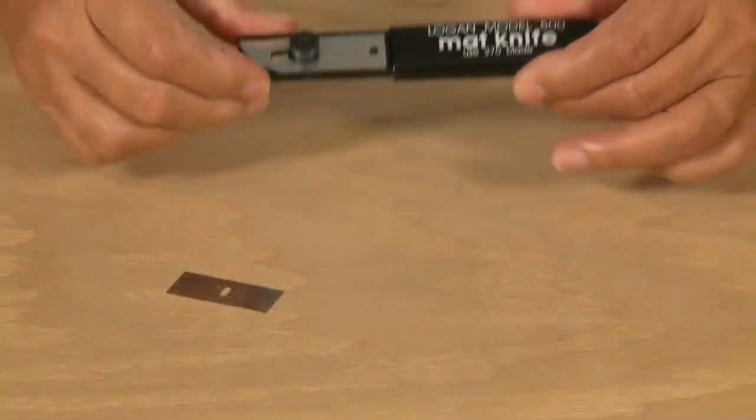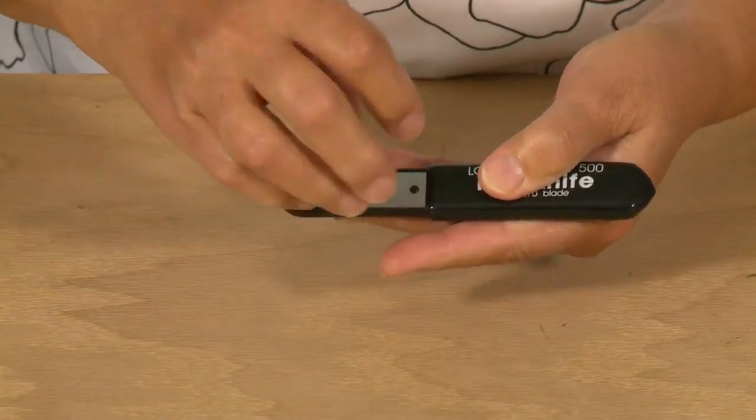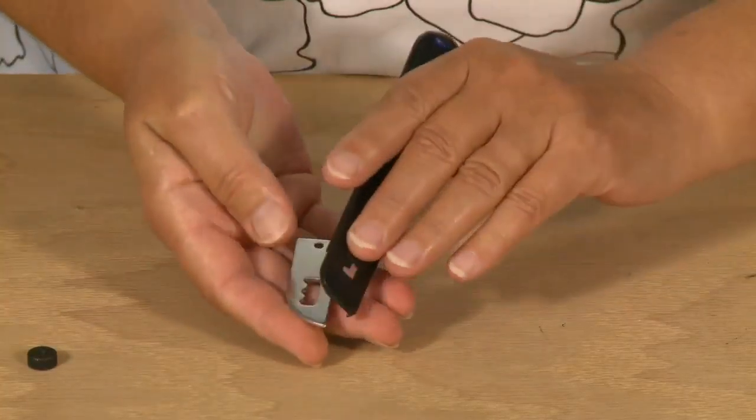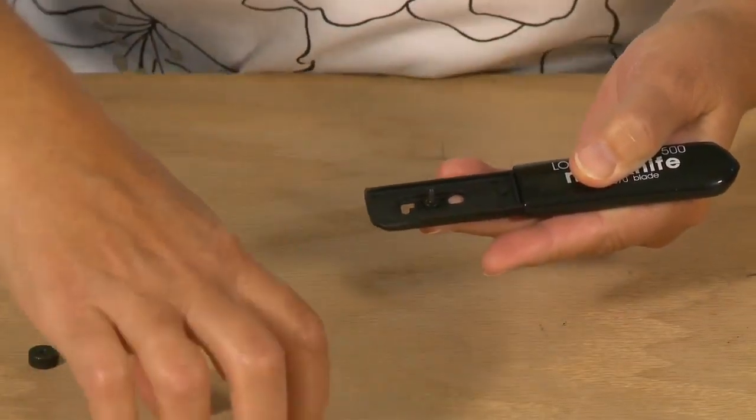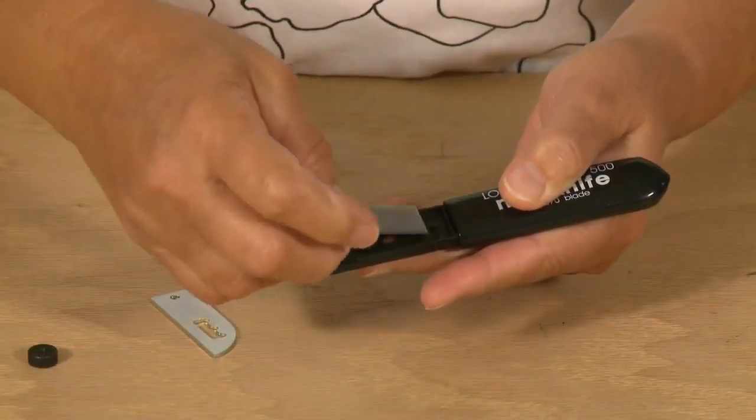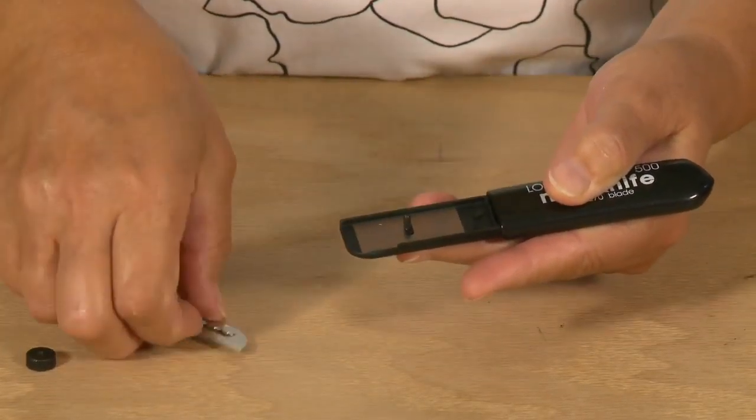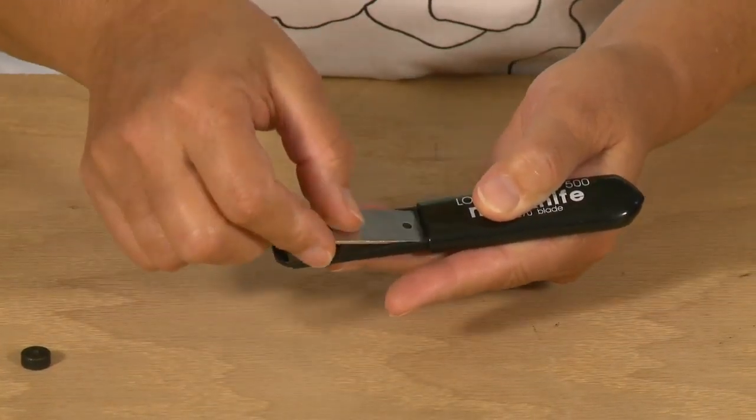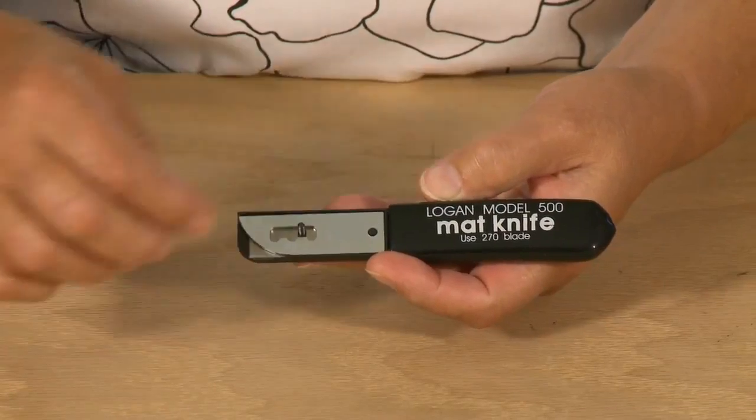To install a blade on the mat knife, first remove the blade holding knob and the blade cover. Install one Logan 270 blade, sharp side down onto the blade holder, and replace the blade cover. Then replace the blade holding knob.